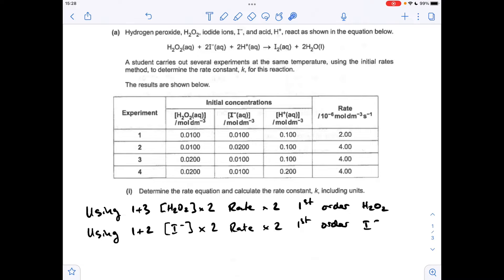Moving on to the I-minus order, I'm using experiments 1 and 2. You can see that the hydrogen peroxide's not changed, neither is the H-plus. The I-minus concentration's doubled, and the rate's doubled. So it's another first order for I-minus.